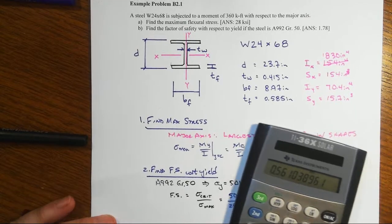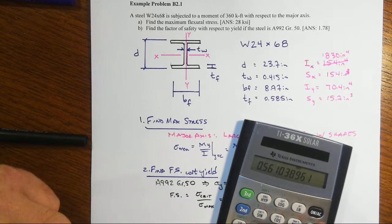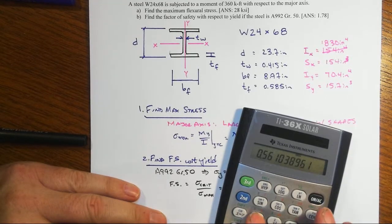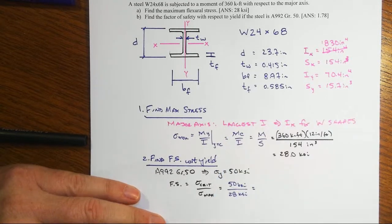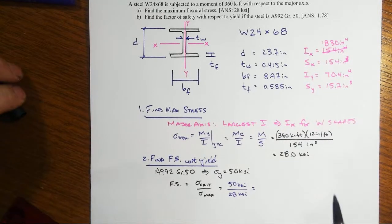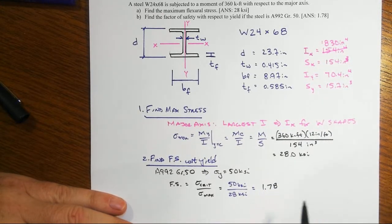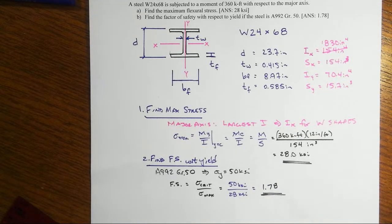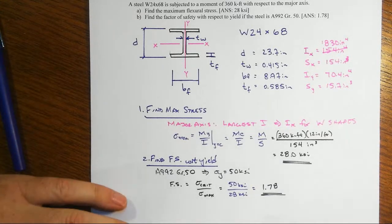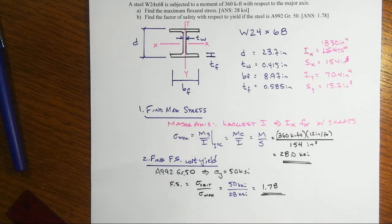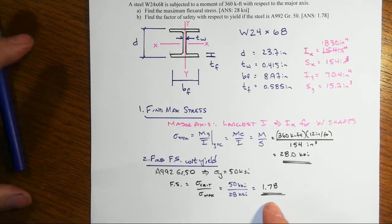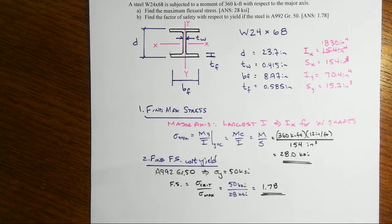We end up with a non-dimensional number. The reciprocal — 0.56 — is the utilization ratio, saying we've taken 56% of the material's strength. Taking the reciprocal of that gives us the factor of safety of 1.78, meaning we have a 78% reserve. As I recall, the minimum factor of safety for bending — so long as we don't have any buckling issues with the compression flange — is something like 1.667 or five-thirds, though I'd have to look that up to be sure.